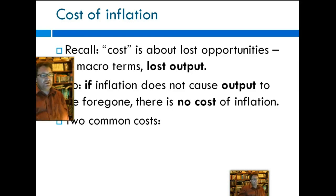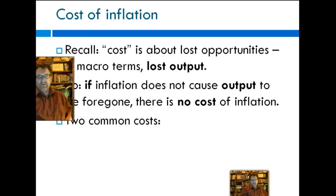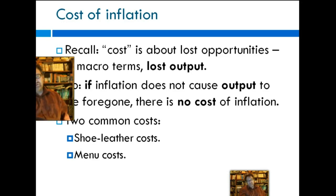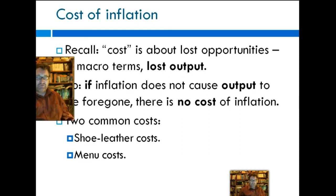There are two kinds of costs of inflation which are standard and usually regarded as present in all modern economies, and these are unavoidable costs. One is shoe leather costs and the other is menu costs. Shoe leather costs refers to the costs associated with checking prices — having to constantly check prices as a consumer, which might be changing all the time. Different products are changing at different rates, and if it's occurring in a fairly rapid way, there are costs associated with figuring out where the best prices are.